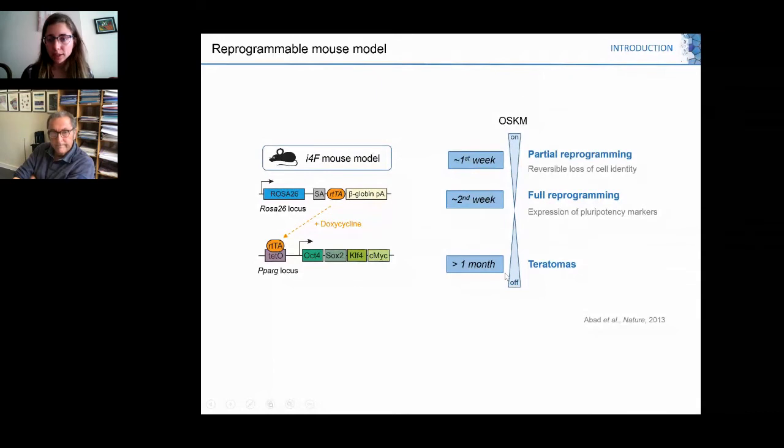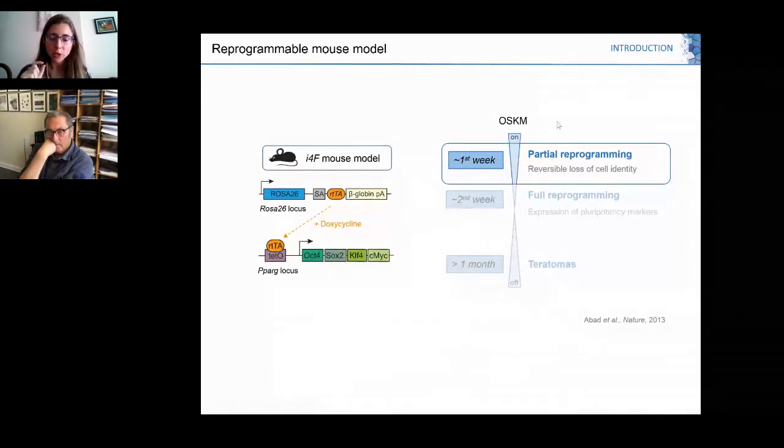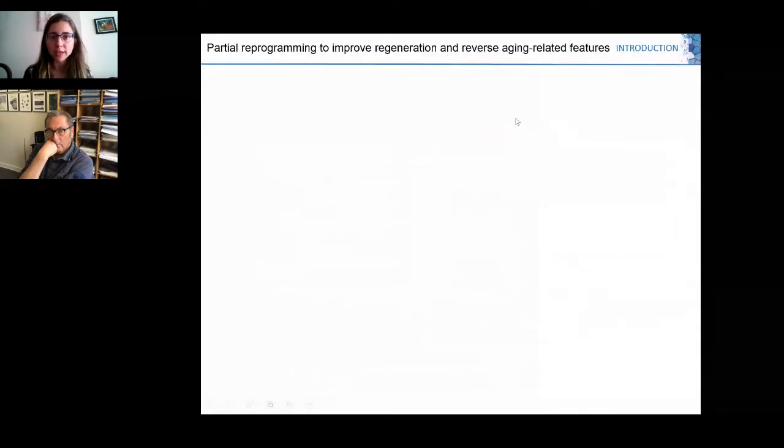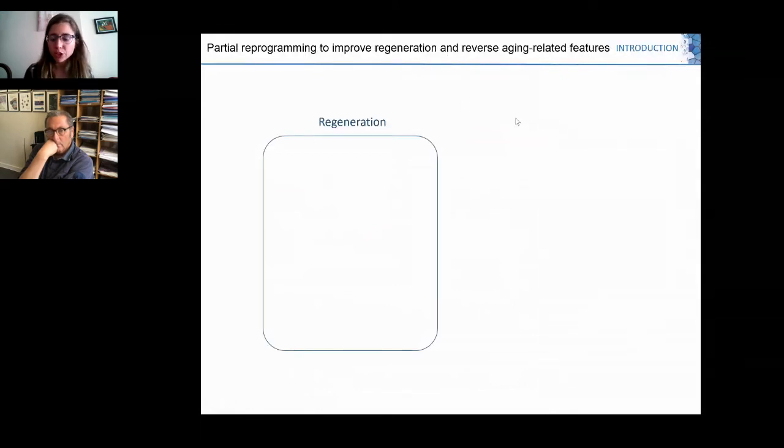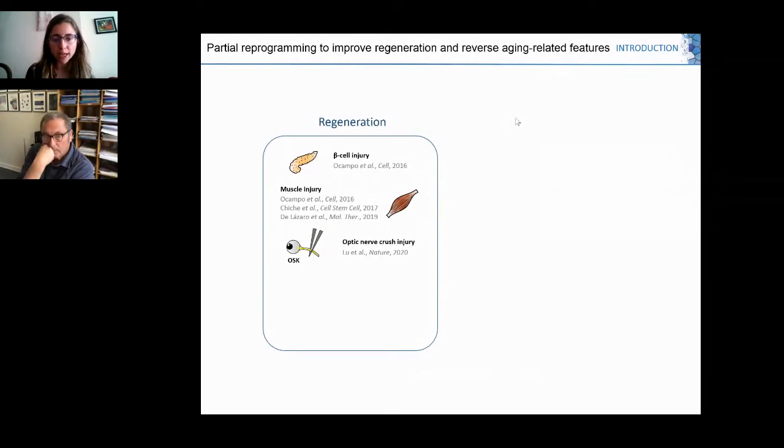We are mainly interested in this first part of the reprogramming process for several reasons. Several previous papers have shown that one or various small pulses of OSKM factors can lead to benefits in both regeneration and aging. In regeneration, one or several pulses of OSKM can lead to better healing upon beta cell injury, muscle injury, optic nerve crush, and in cases of skin wound and myocardial infarction.